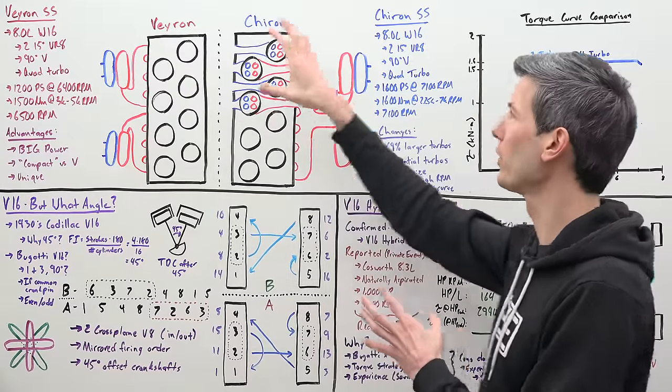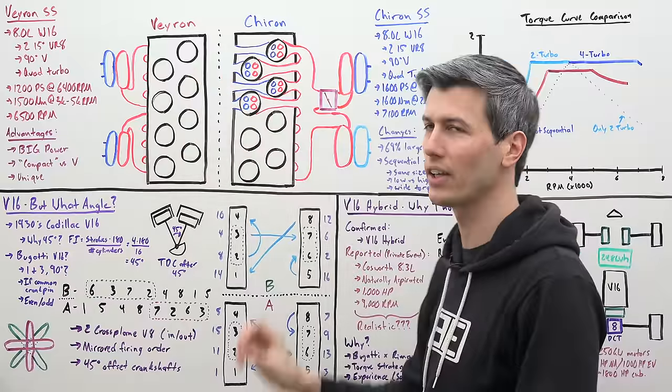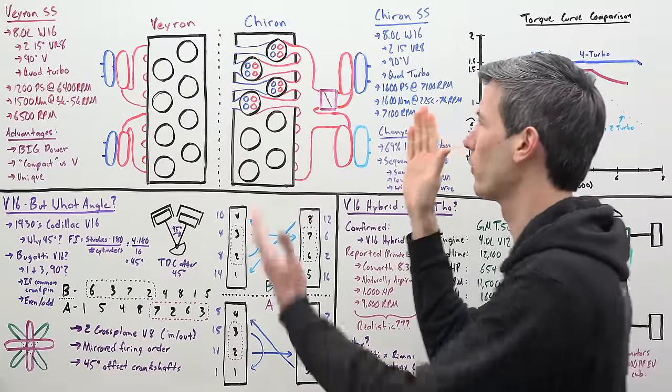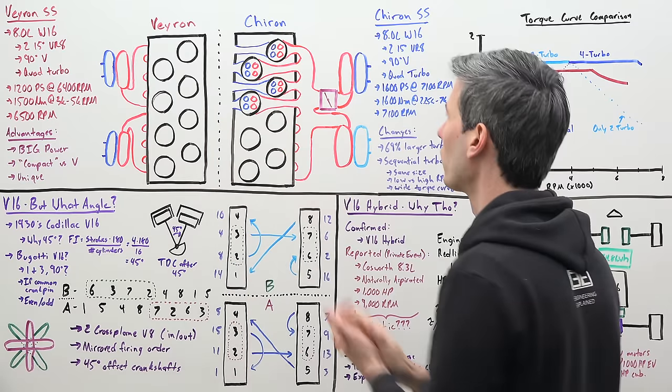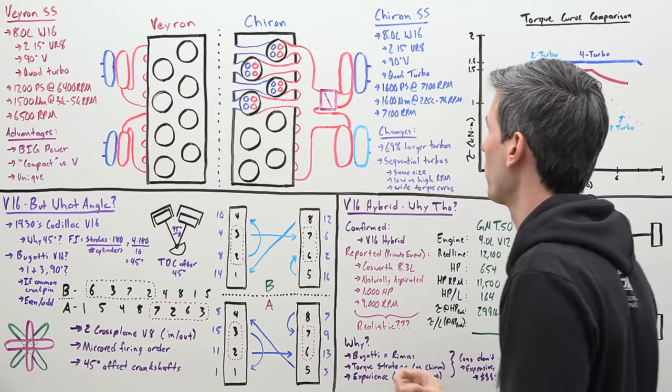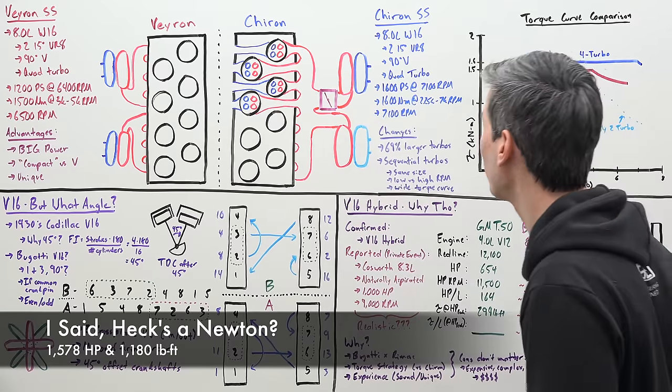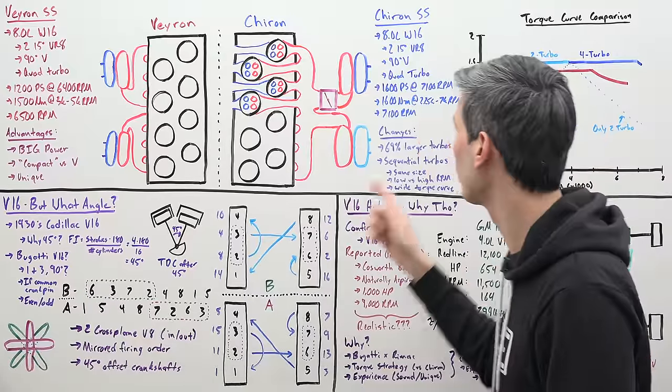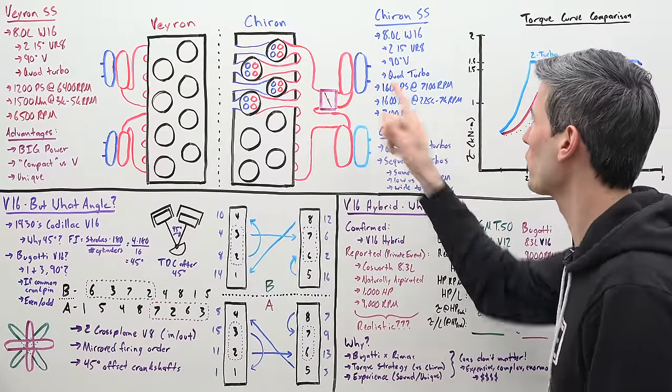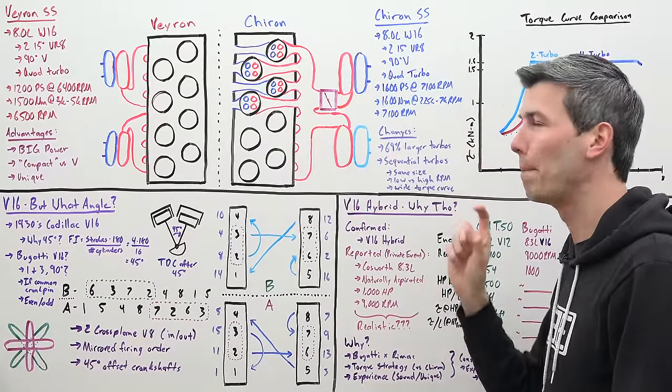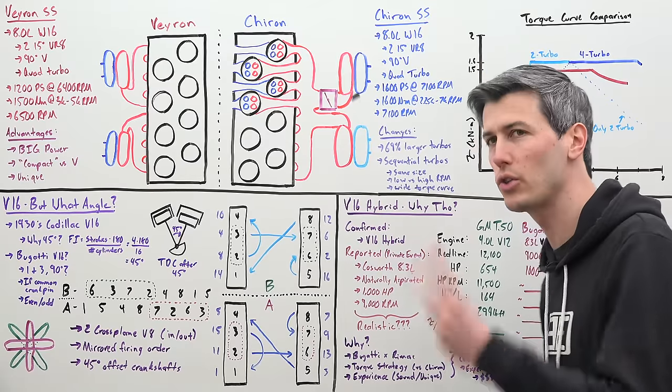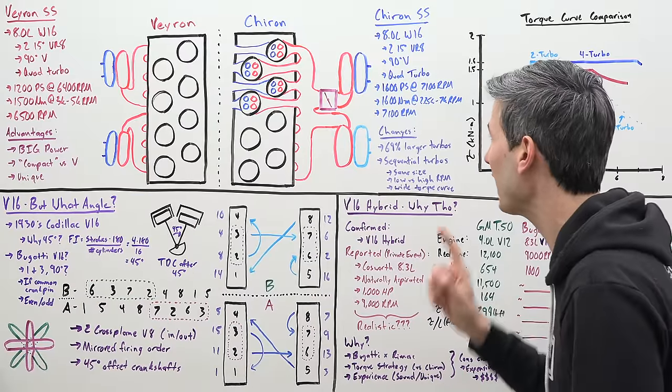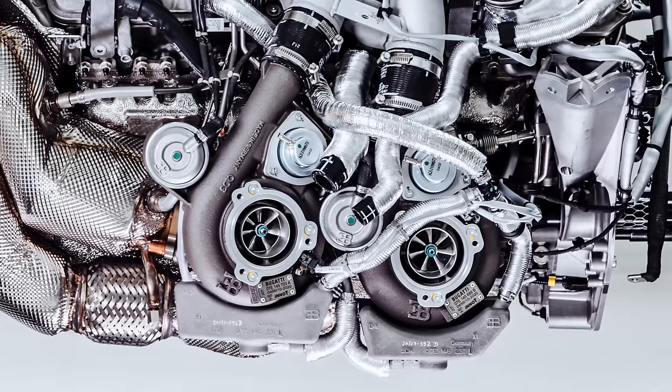As we go from the Veyron to the Chiron, how did this W16 evolve? A lot of the specs look the same - it's still an 8 liter W16, you still have those two VR8s at a 90 degree V and you still have quad turbochargers, but you'll notice it's a lot more power: 1600 metric horsepower and 1600 newton meters of torque, so more torque as well and a slightly higher red line. How were they able to make so much more power? Well the big change came with the turbochargers. Two changes here: first of all the turbos were 69 percent larger. Nice.